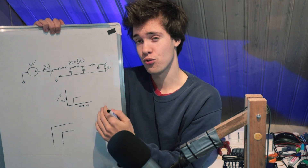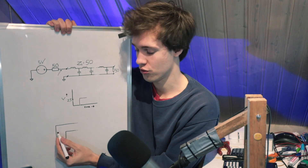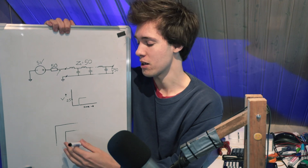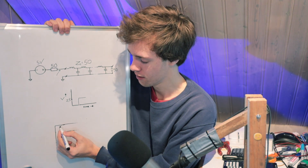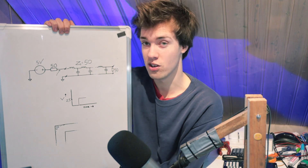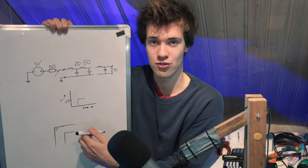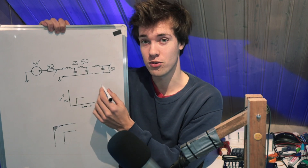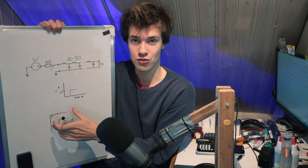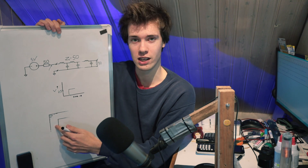Now we get back to the PCB trace. Let's say we have a trace on a circuit board with a 90 degree corner. The thing about this corner is the width of the trace is larger than it needs to be at the bend — there is additional metal that we don't necessarily need. That extra metal gives this corner extra capacitance, so the corner has more capacitance than the rest of the trace. Since the amount of capacitance affects characteristic impedance, the corner would have a different characteristic impedance from the rest of the trace, which could cause a reflection. That's why it's a good idea to avoid 90 degree corners on a circuit board.